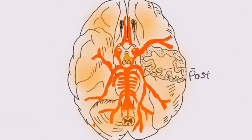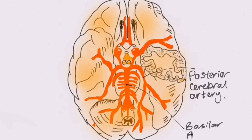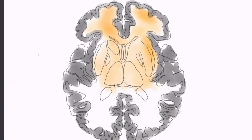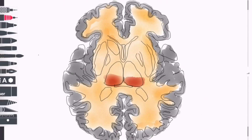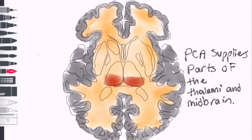We'll begin by talking about the anatomy of the PCA. As you can see here, it arises from the posterior part of the circle of Willis on the inferior aspect of the brain, where they form the terminal branches of the basilar artery. Early in its course, the PCA gives off a deep branch to the thalamus and part of the midbrain.